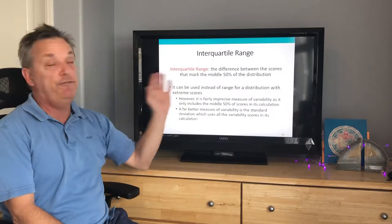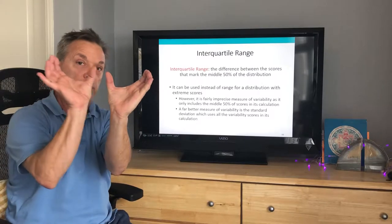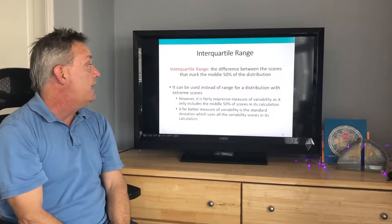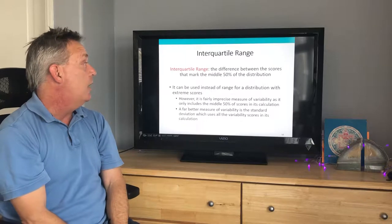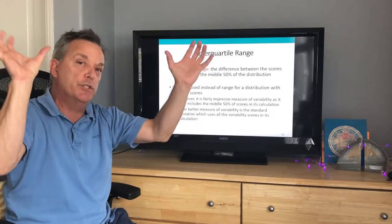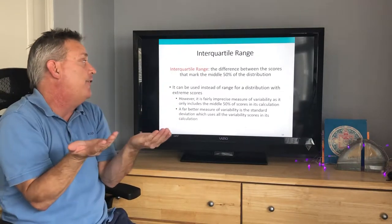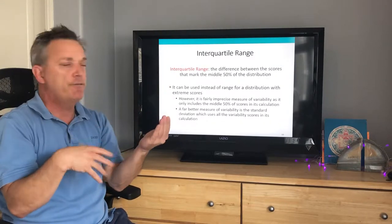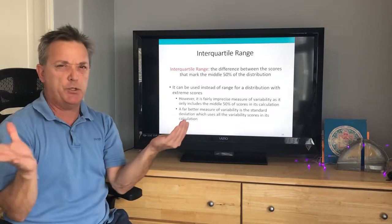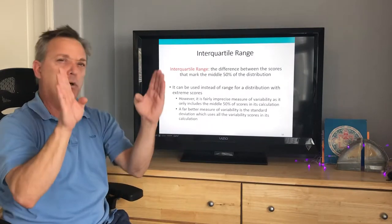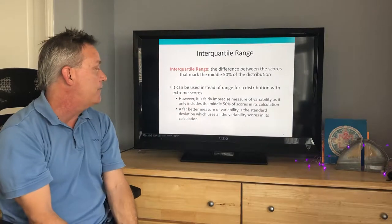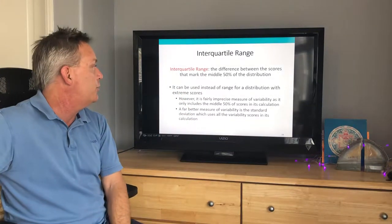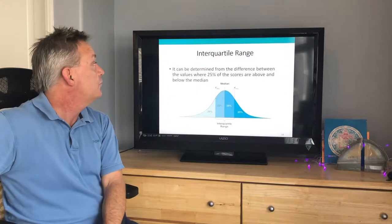The interquartile range is simply the difference between the scores that mark the middle 50 percent of the distribution. You eliminate the scores on the top and the scores on the bottom. It can be used instead of a range for distributions with extreme scores, giving you that middle rather than just reporting those extreme values. It's very popular for college admissions — the ACT and SAT report the middle 50 percent of scores of admitted students.